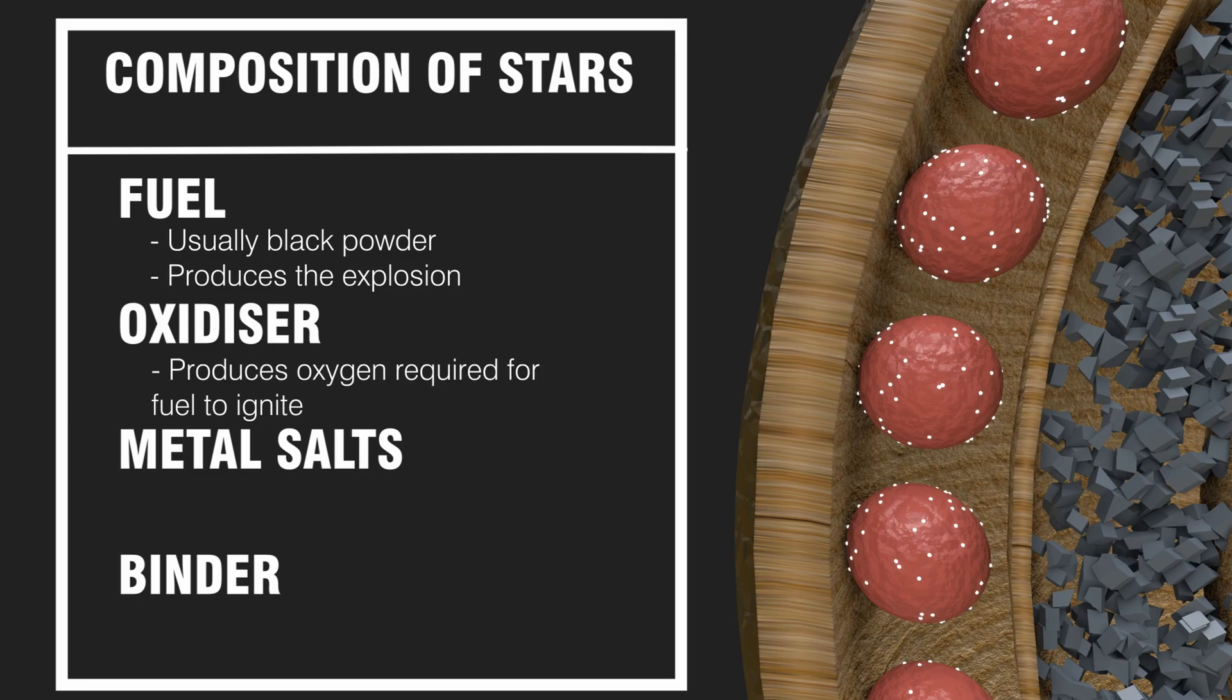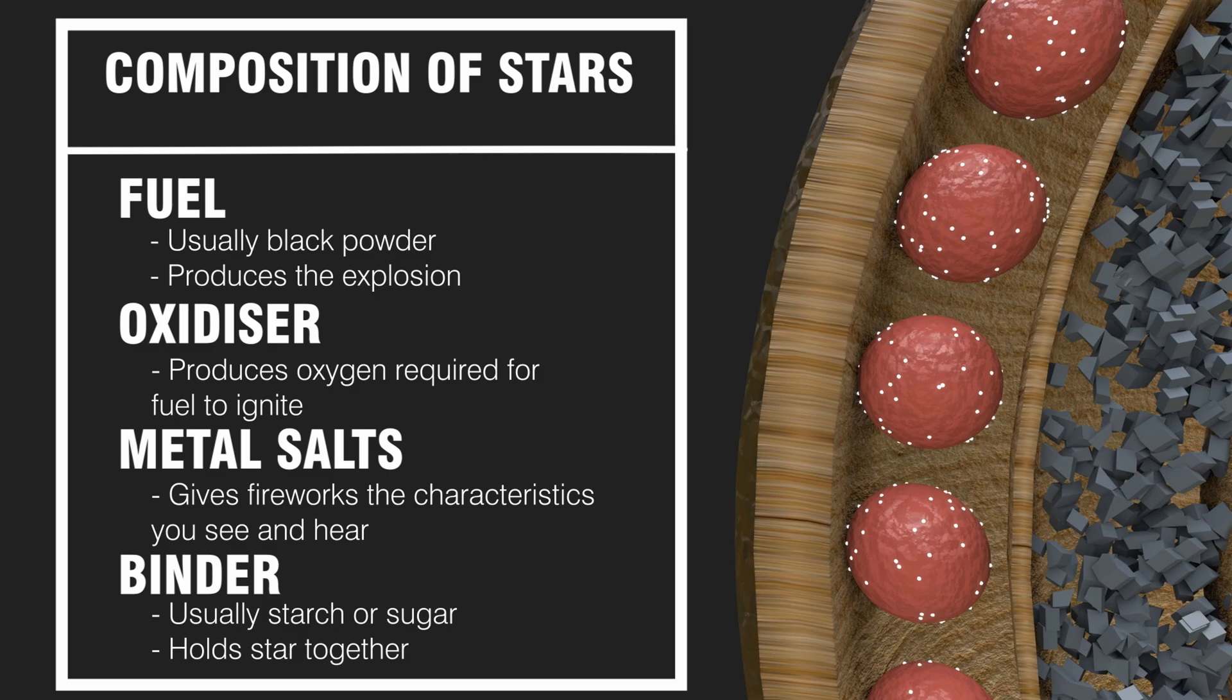An oxidizer produces oxygen required for the star to burn; there are numerous options available. Metal salts give the explosion the characteristics you see and hear. The binder holds the various components of a star together. Sugar or starch are typically used.